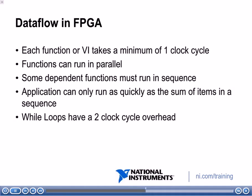Because of the data flow principles in FPGA, each function or VI is going to take a minimum of at least one clock cycle — that's because of the enable chain. Functions can run in parallel, but some functions are dependent on each other. If you have ten functions that run in sequence, that whole sequence is going to take at least ten clock cycles. The application can only run as quickly as the sum of items in a sequence.